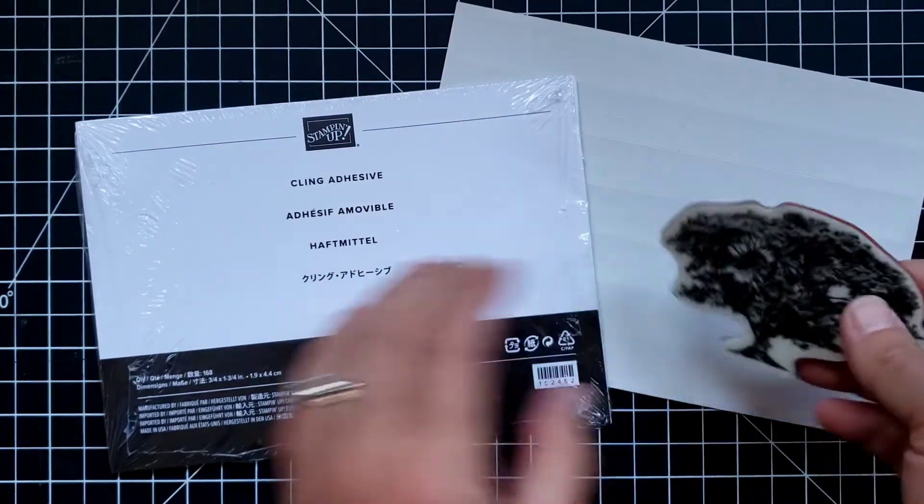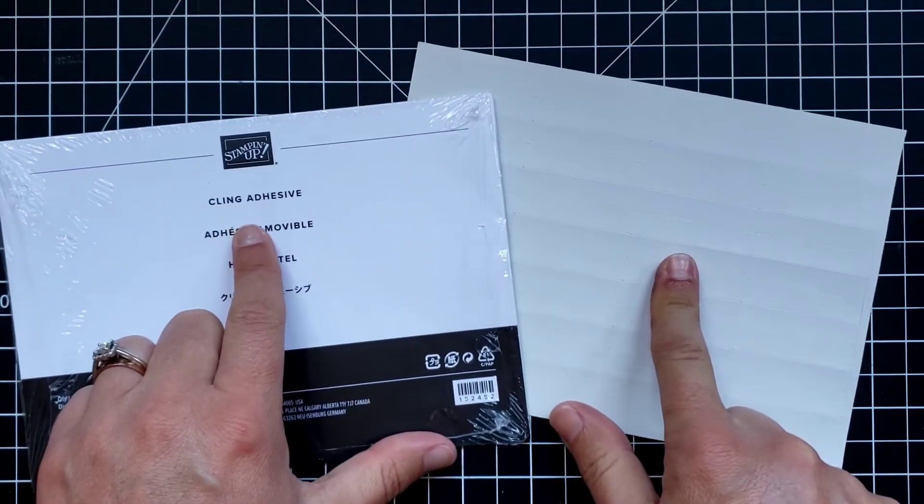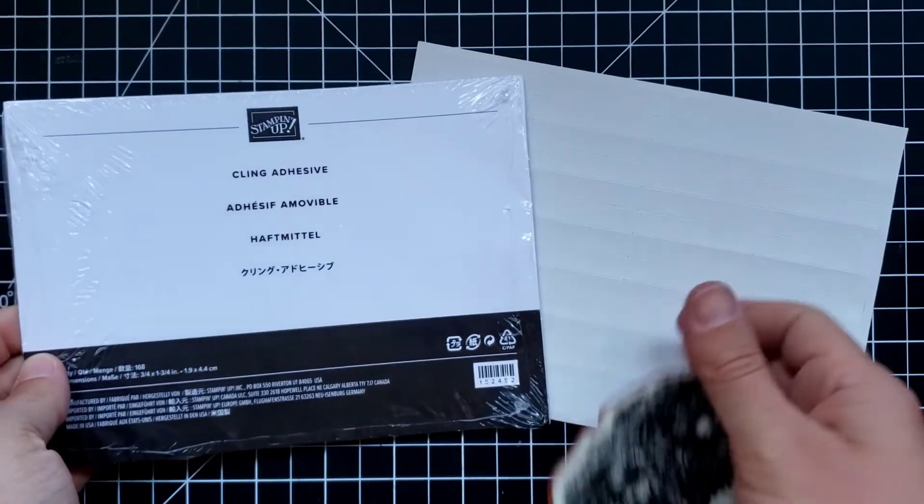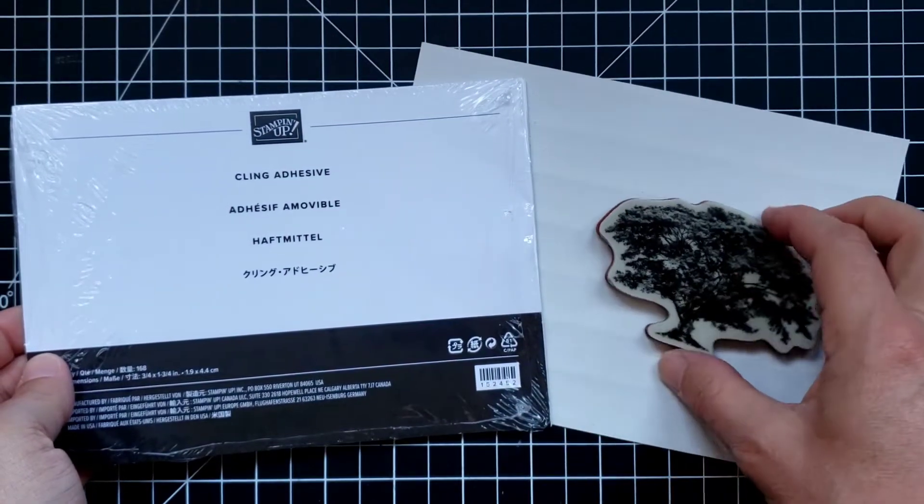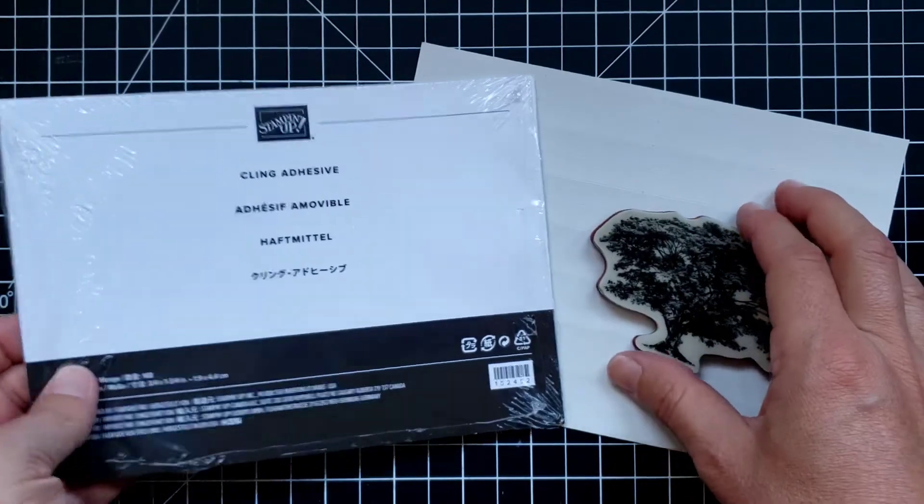So Stampin' Up came out with cling adhesive. These come in little strips so that you can turn these old clear mount stamps that don't have the cling adhesive into cling and never have to worry about this again.